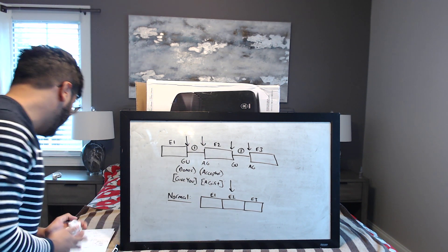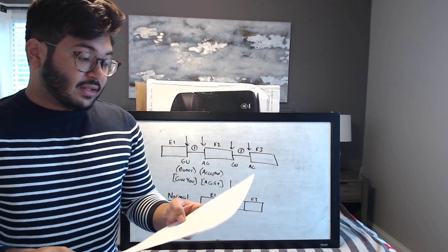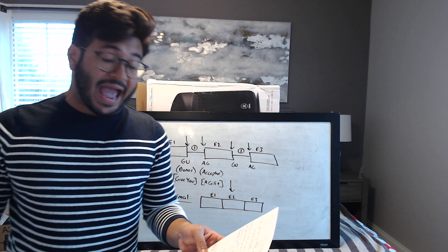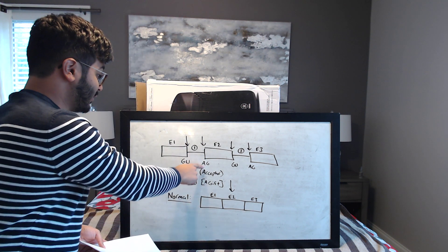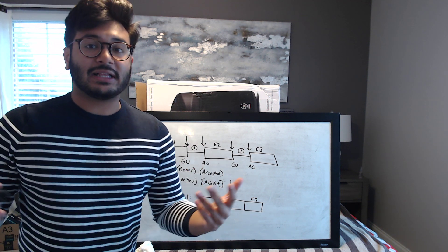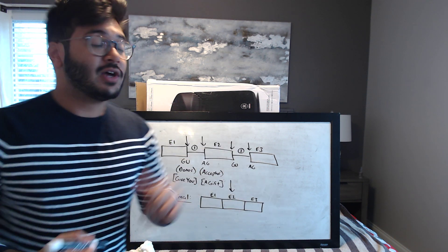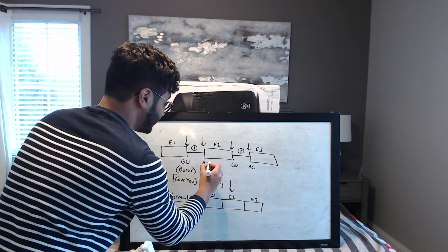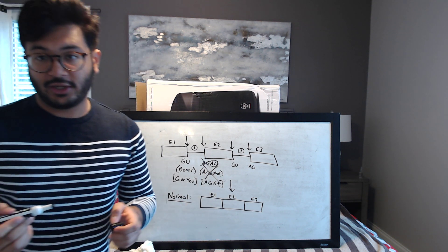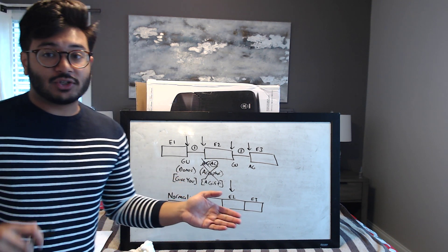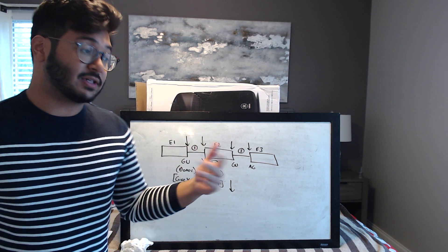Now let's look at the first example — a mutation at intron one at the splice acceptor site. Anytime they say there's a mutation at a site (without saying a new splice site was added), it means that site has been taken out. In this case, the acceptor site of intron one is taken out and replaced with something like AC — not AG.